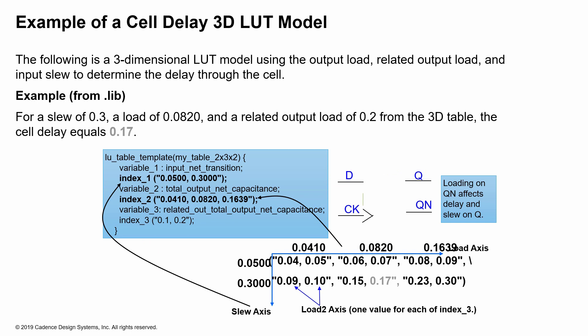In a 3D lookup table model, you also have the related output load as seen by Q. And so therefore, that Q bar, whatever the loading is, or Qn, the loading is actually applied and thus calculating the delay at Q. So this illustration here basically shows the slew axis and the load axis and load 2 axis.